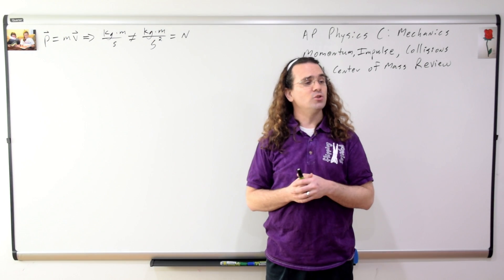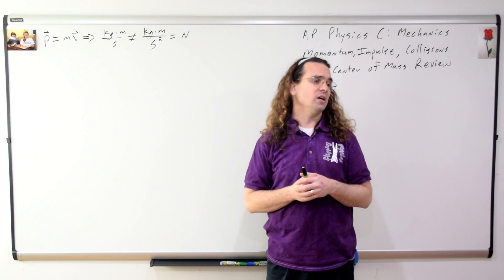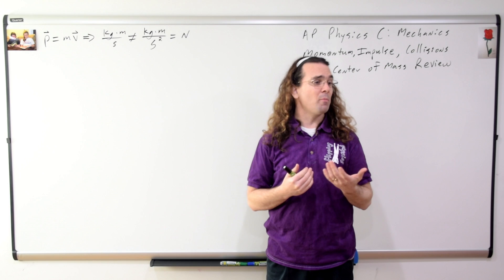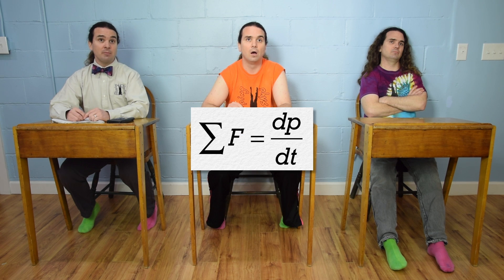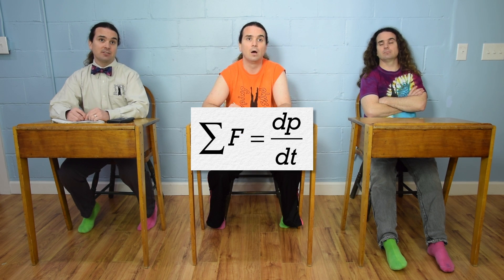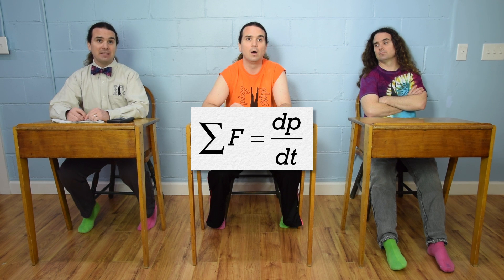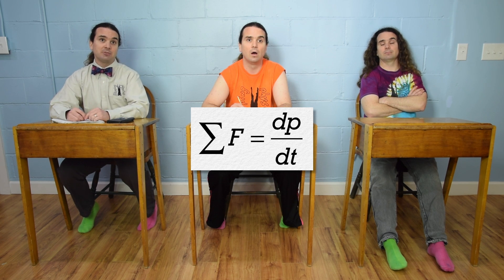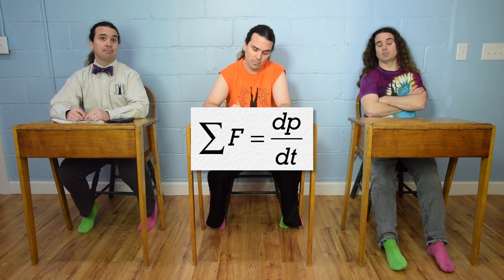What is Newton's second law in terms of momentum? The sum of the forces acting on an object or system of objects equals the derivative of the momentum of that object or system of objects with respect to time. Don't forget — force and momentum are vectors.